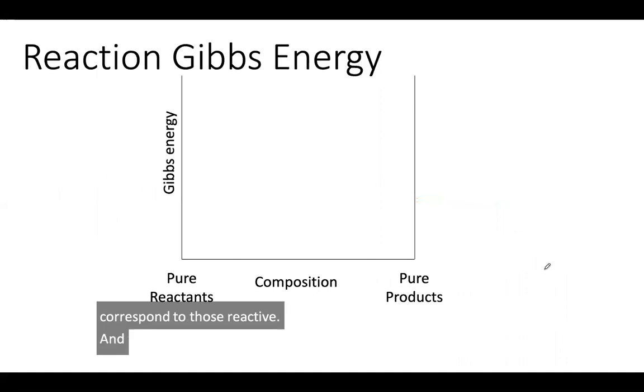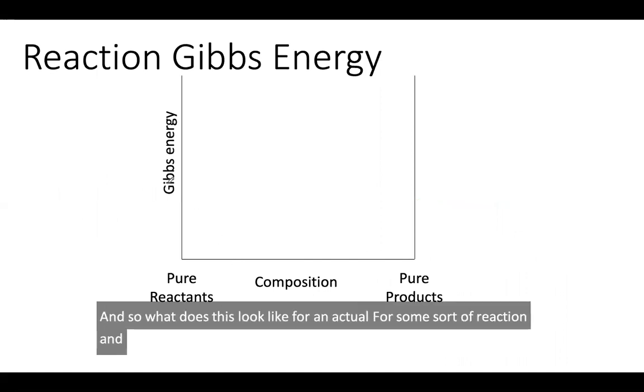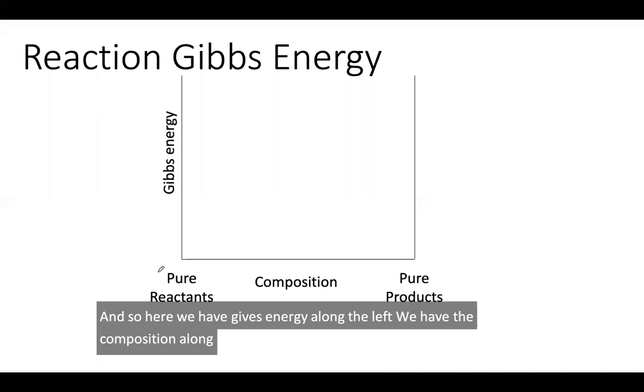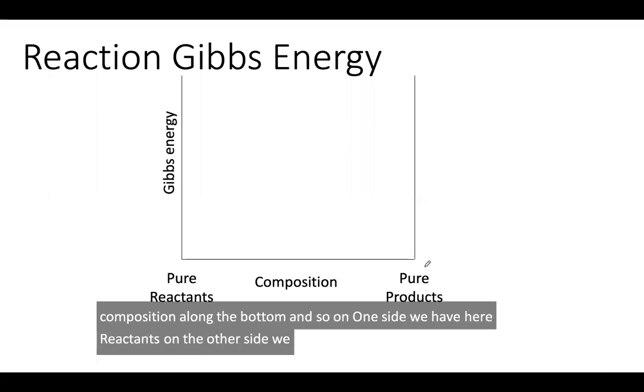So what does this look like for an actual reaction? Here we have Gibbs energy along the left, we have the composition along the bottom. And so on one side we have pure reactants, on the other side we have pure products. And so we can kind of map out what the Gibbs energy might look like.